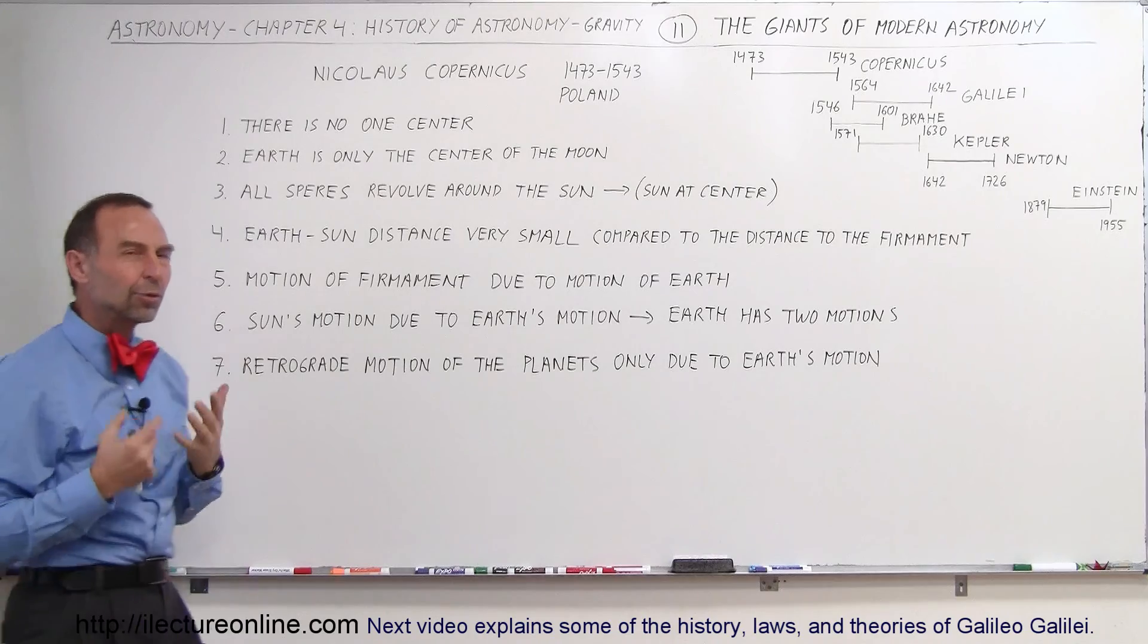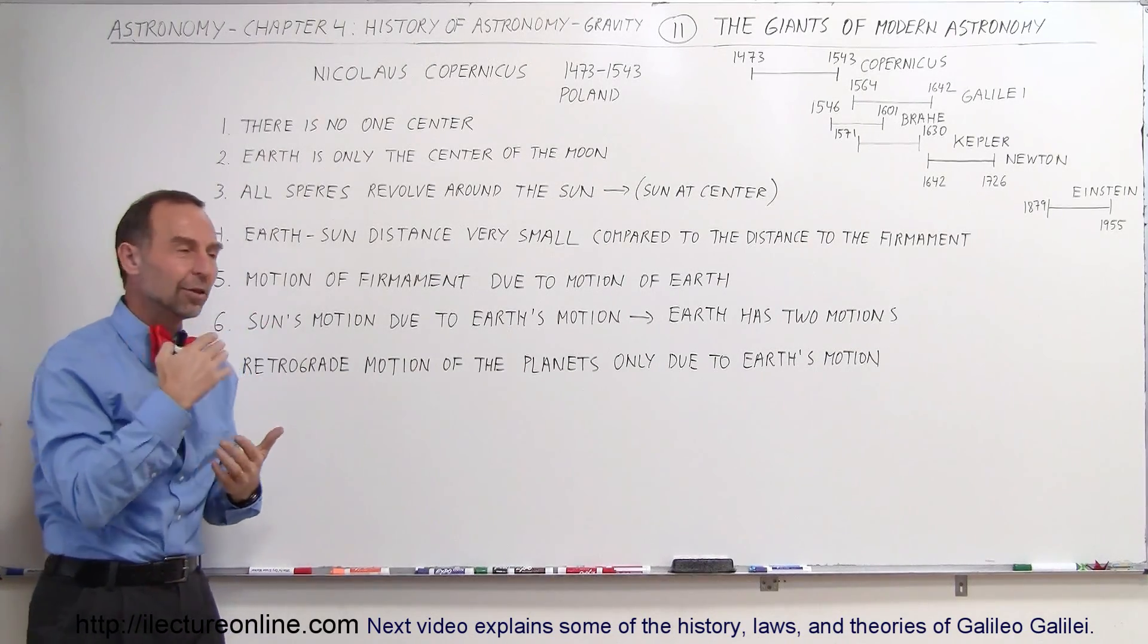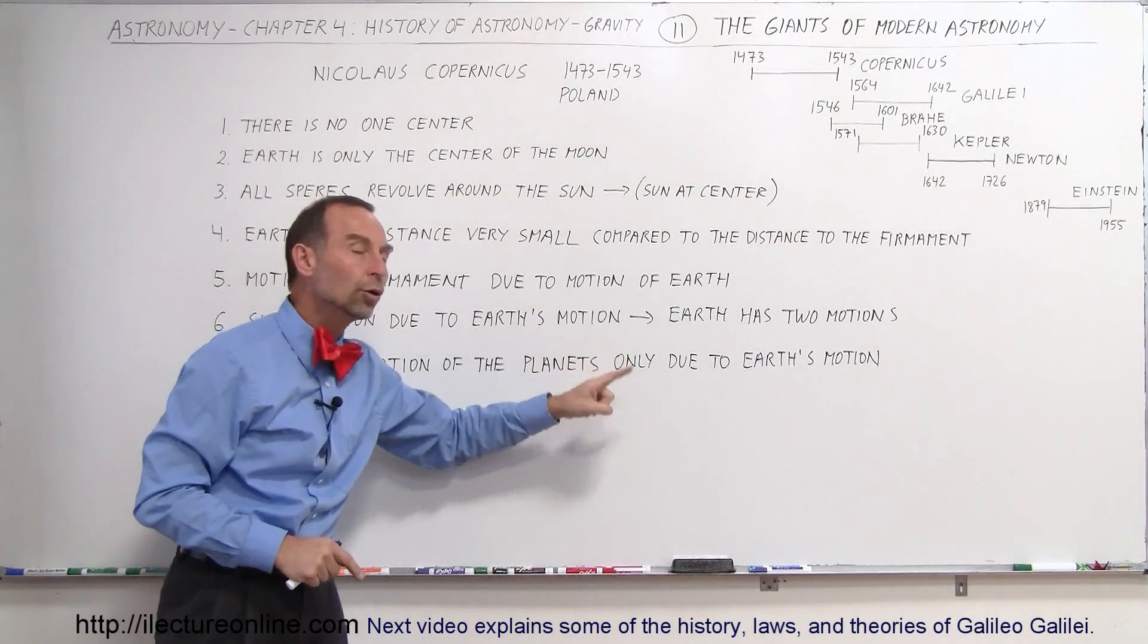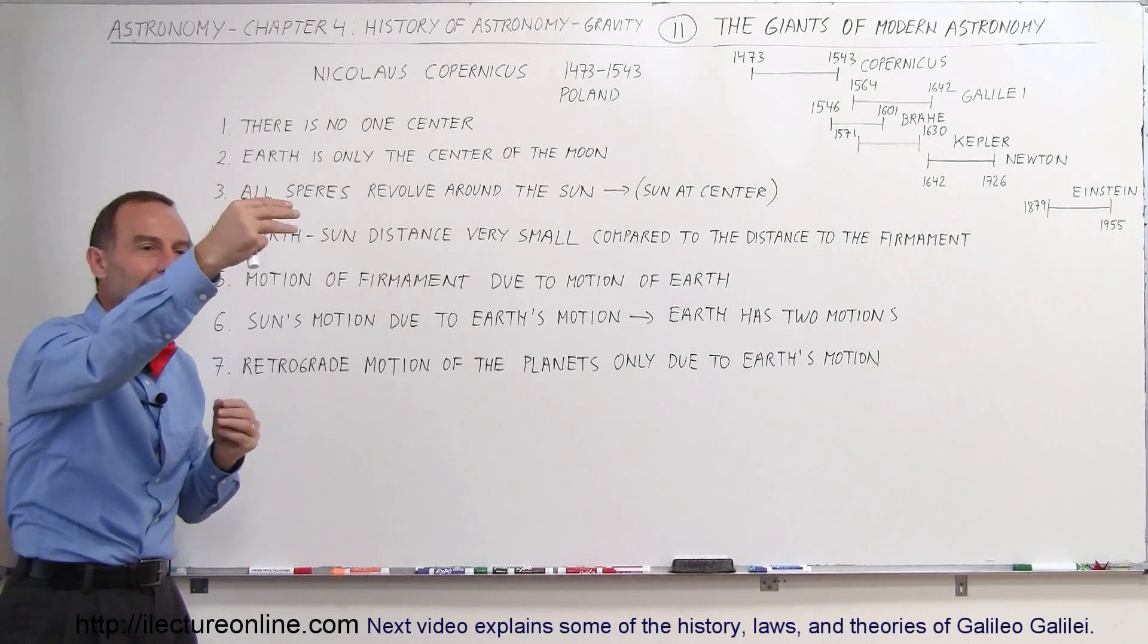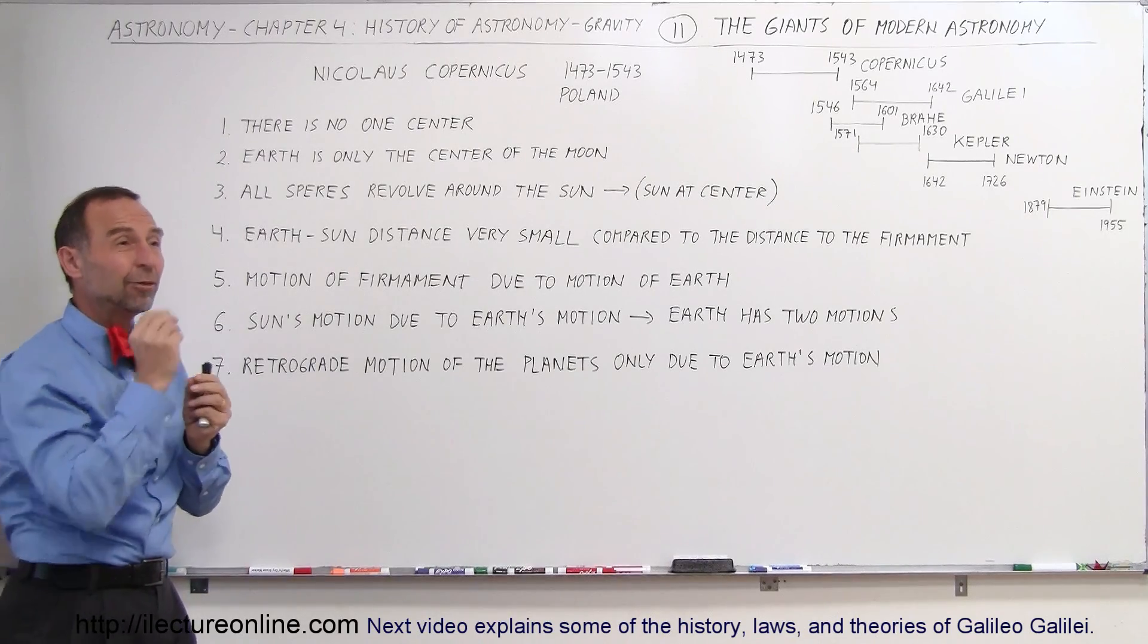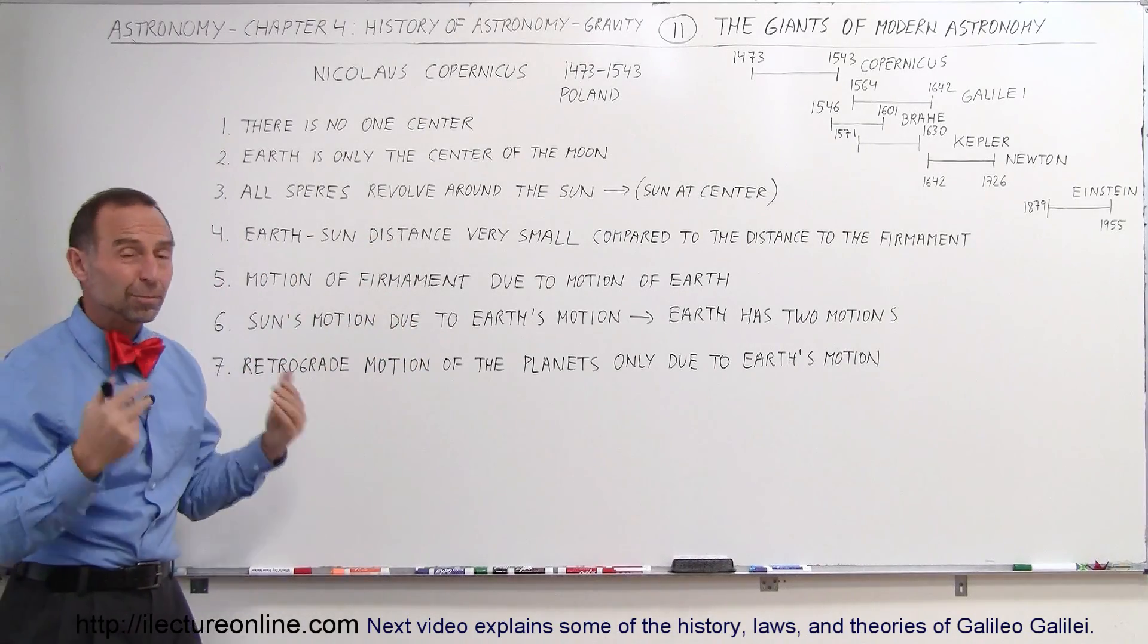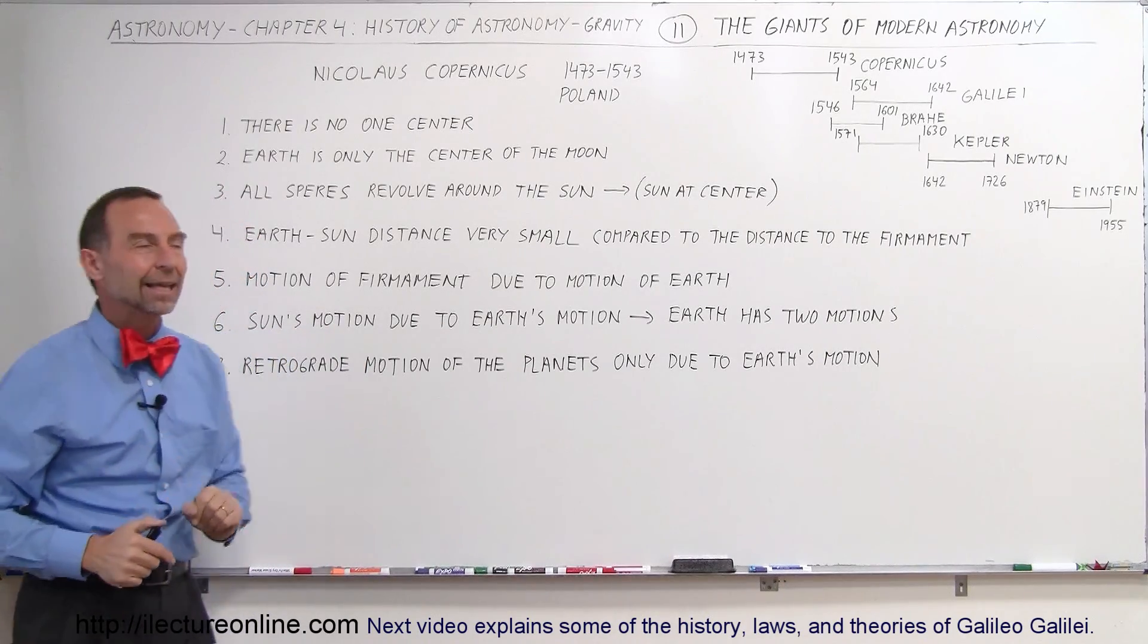he then also said that the retrograde motion, the motion that no one could ever explain, and so they came up with the theory of the deferents and the epicycles, he said, we don't need the deferents and epicycles. We understand now that the retrograde motion of the planets is only due to the Earth's motion. The relative position of the Earth, the sun, and the planets, if you observe them, if you do the geometry and you connect them with lines, you then realize that from our perspective, it looks like sometimes the planets will move in one direction, and sometimes the planets will move in the opposite direction. Simply, our observations, and it's due to the Earth's motion, not because of anything else.